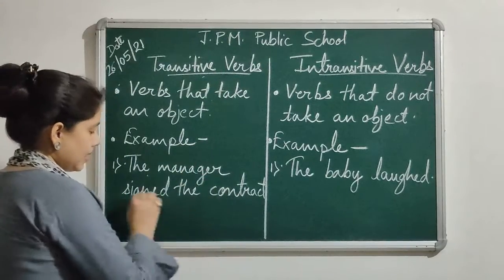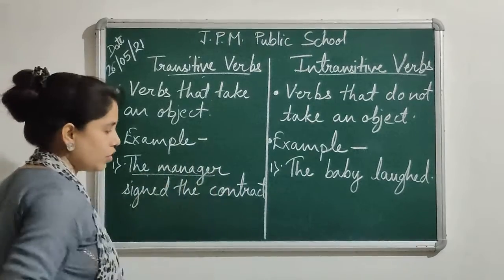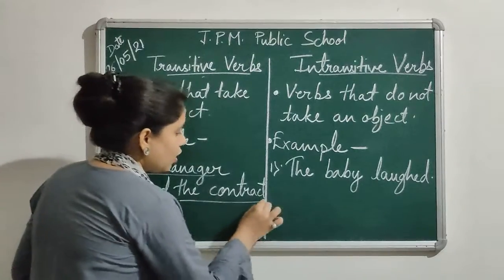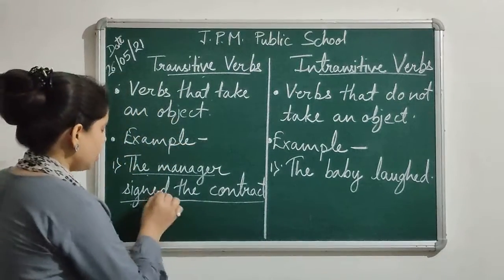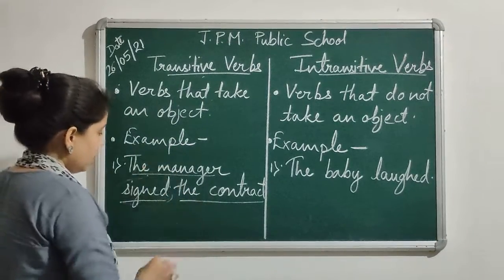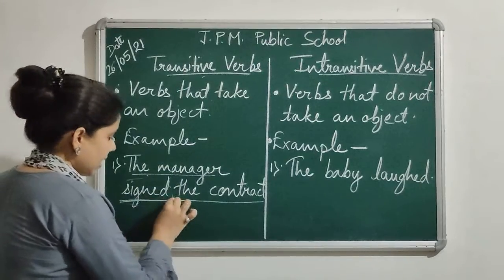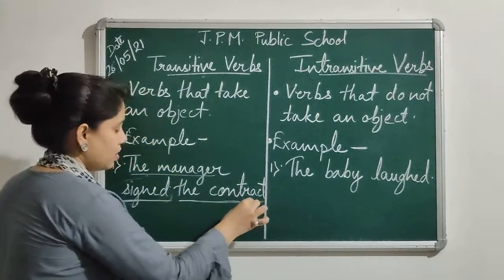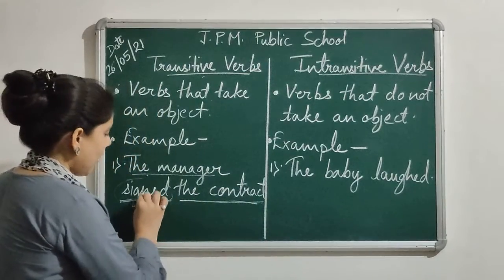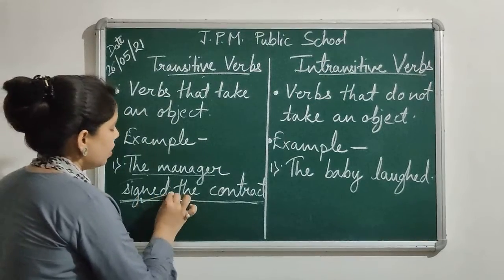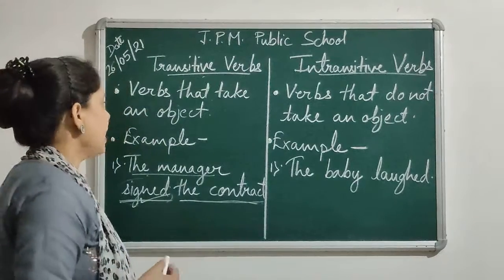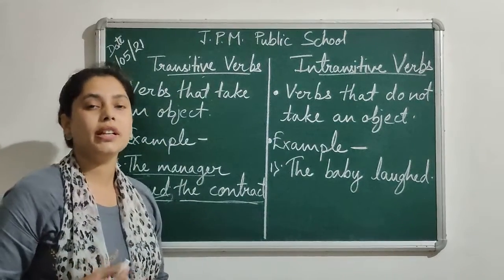In this sentence, the manager is the subject. 'Signed' is the verb, and 'the contract' is the object on which this action has been applied by the manager. So the word 'signed' requires 'contract' — it requires an object to complete its meaning. That is why this verb is a transitive verb, as transitive verbs are the verbs that require an object to complete their meaning.